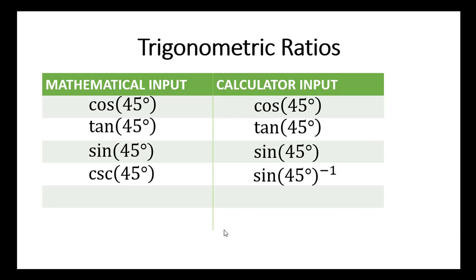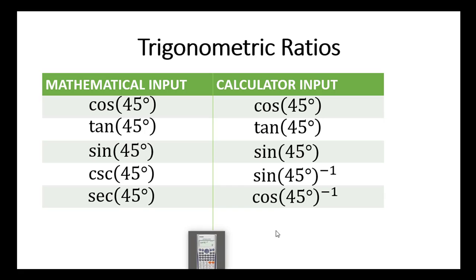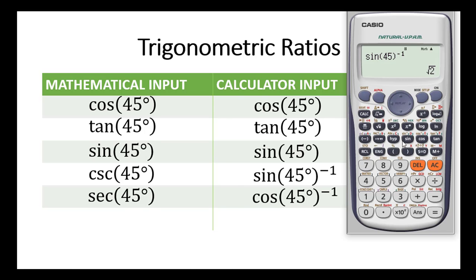Let's proceed to the next one, which is sec — the secant ratio. The secant ratio is simply the reciprocal of the cosine ratio. So you simply key in cos 45 to the exponent negative 1 as shown here. We press cos 45, close bracket, to the exponent negative 1, then press equal to. The answer is also the square root of 2.